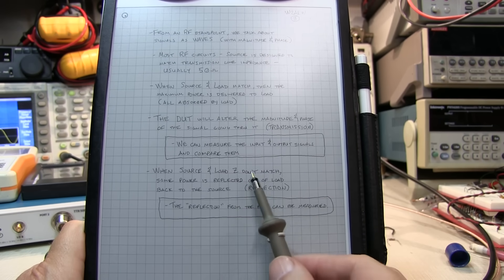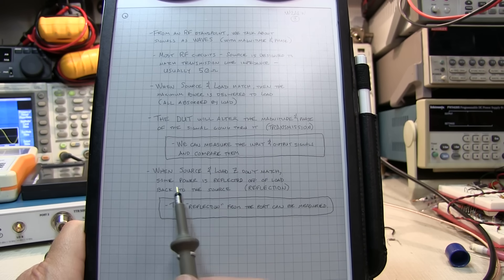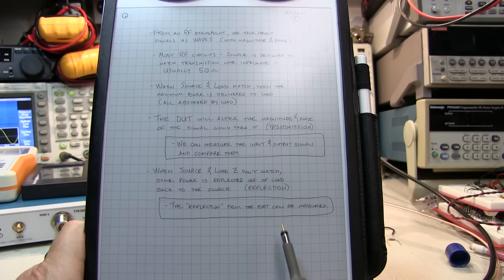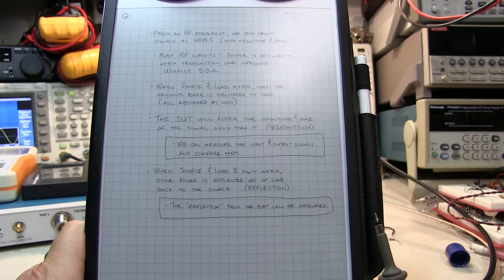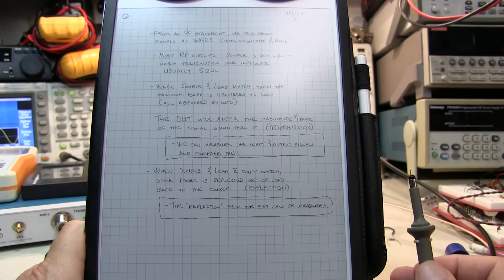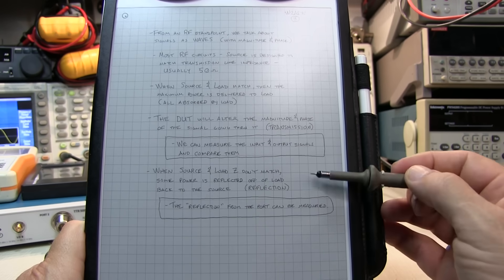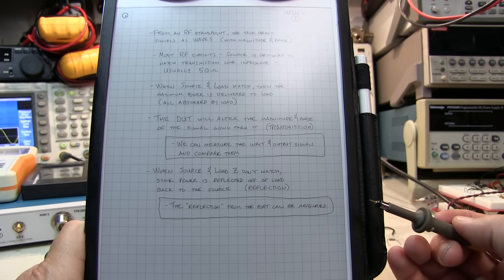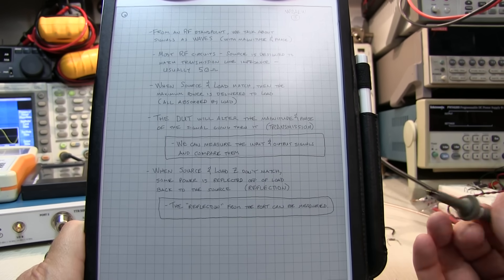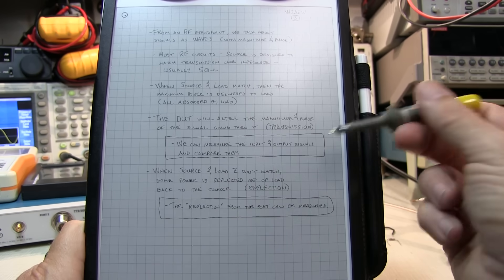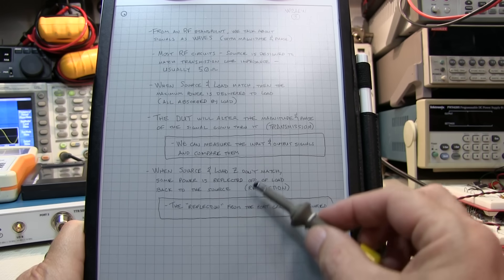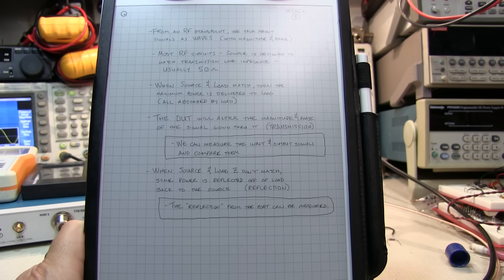When source and load impedances don't match, some power is reflected off of the load and back towards the source. We call these the reflection properties. That reflection signal can be measured and compared to the input to see what's going on. This topic is something you typically don't run into unless you're doing RF work. If you're just building analog circuits and probing the inputs and outputs, you don't really think about signal reflections.